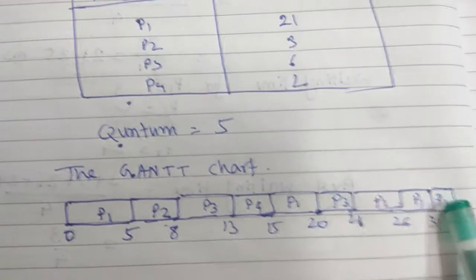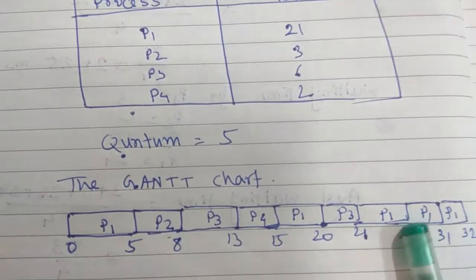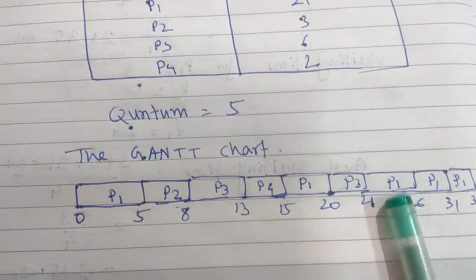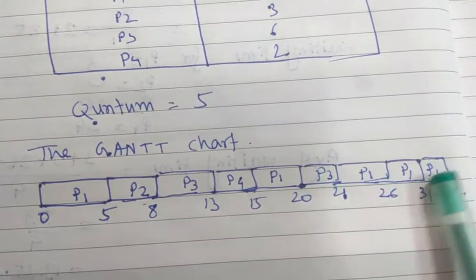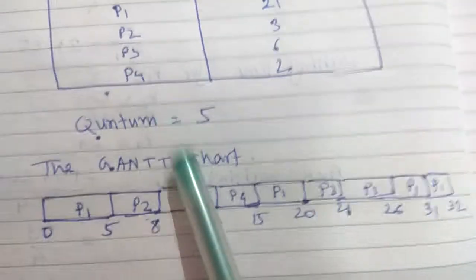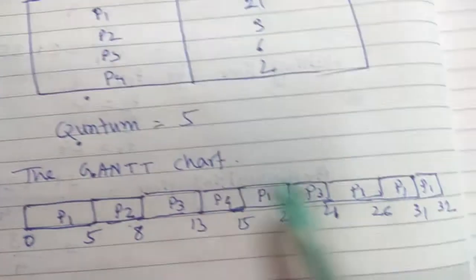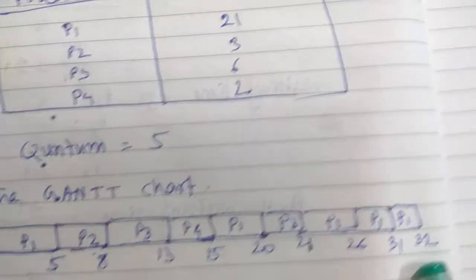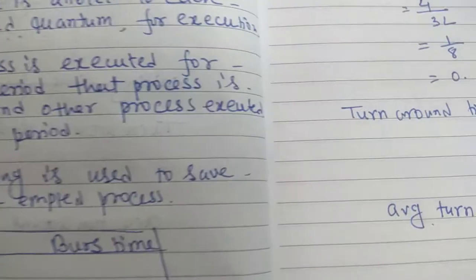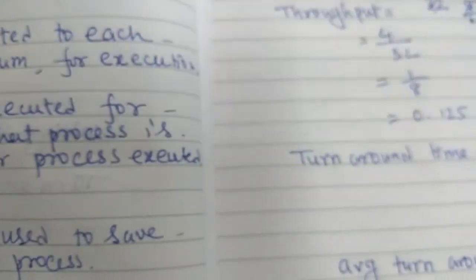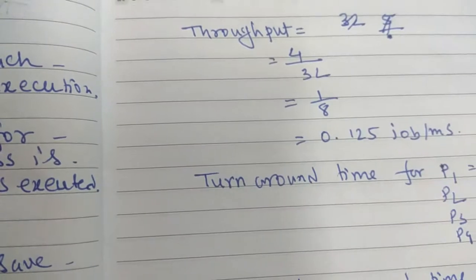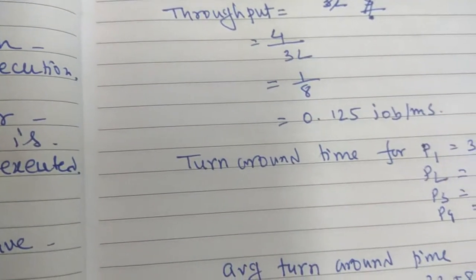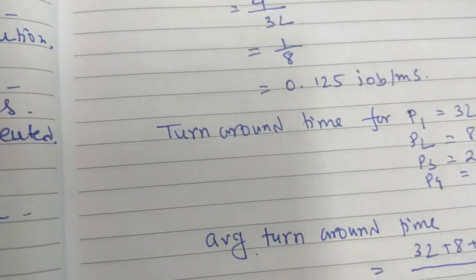So what will be the throughput here? Total number of jobs is 4 and total time is 32. So throughput is 4/32 = 1/8 = 0.125 jobs per millisecond.